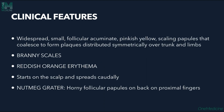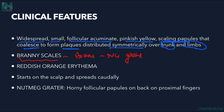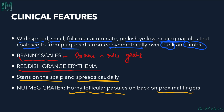The clinical features include widespread small follicular lesions which are pinkish-yellow in color, and scaly papules that coalesce to form plaques distributed symmetrically on the trunk and limbs. There are branny scales resembling rice bran, along with a reddish-orange erythema. The disease classically starts on the scalp and spreads caudally. Horny follicular papules on the back of the proximal fingers feel like a nutmeg grater on palpation.